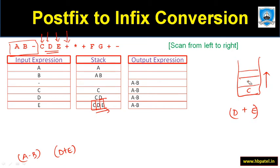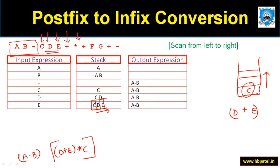Next comes multiplication. Now we have only one operand remaining on the stack, which is 'c', and we multiply it by the last output expression 'd + e'. So we get 'c * (d + e)'.